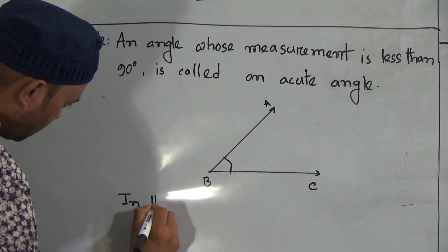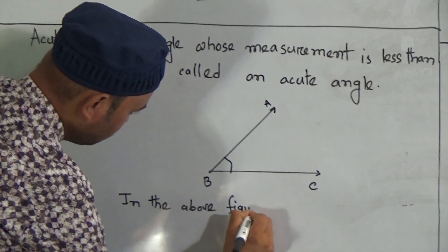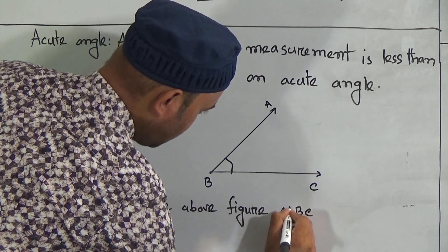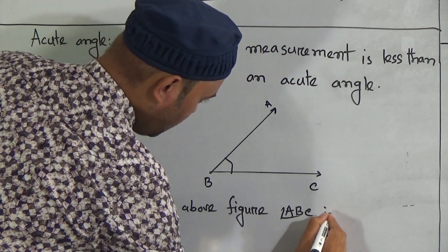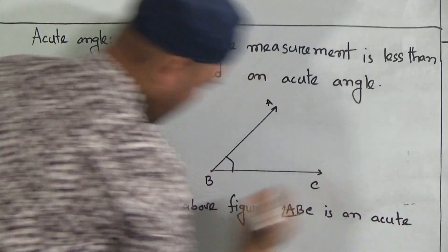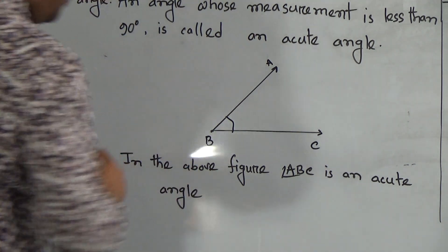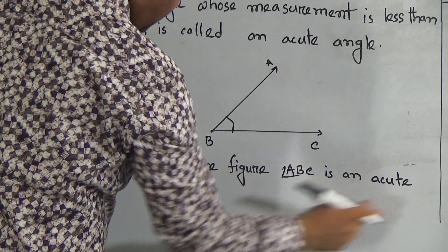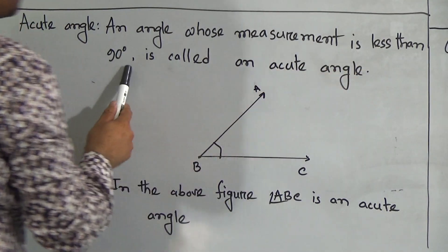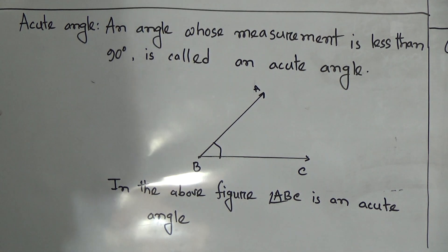Call this point A, this point B, and this point C. So in the above figure, angle ABC is an acute angle. An angle whose measurement is less than 90 degrees is called an acute angle. Hope my dear students you have understood the definition of angle and acute angle.